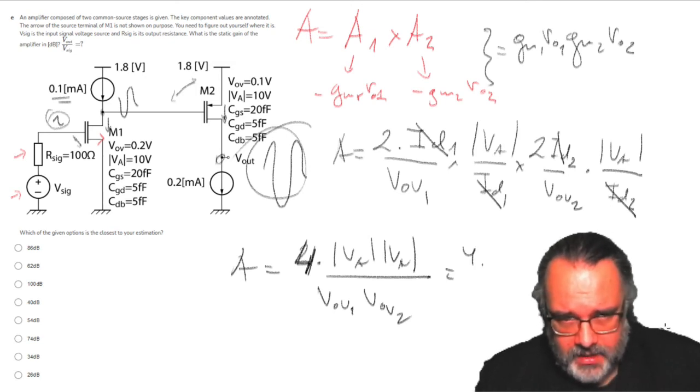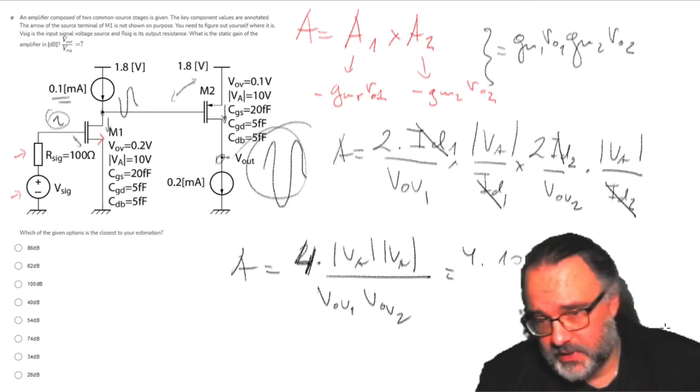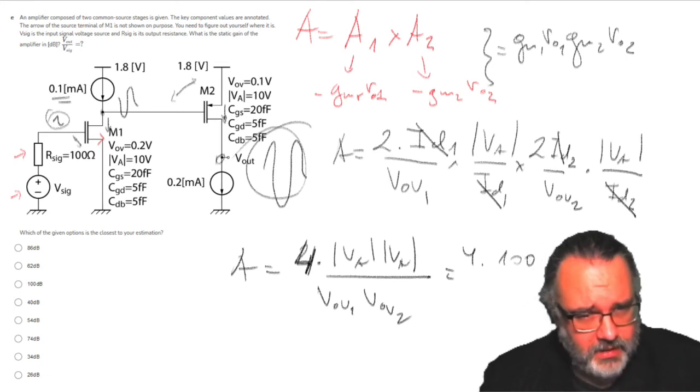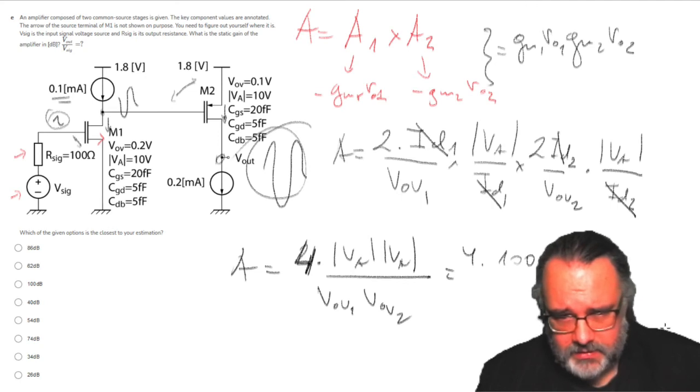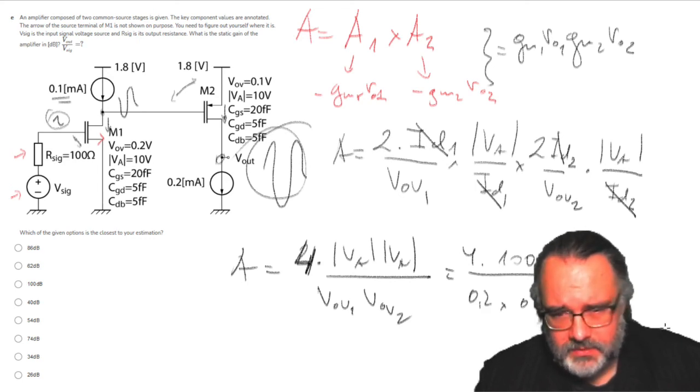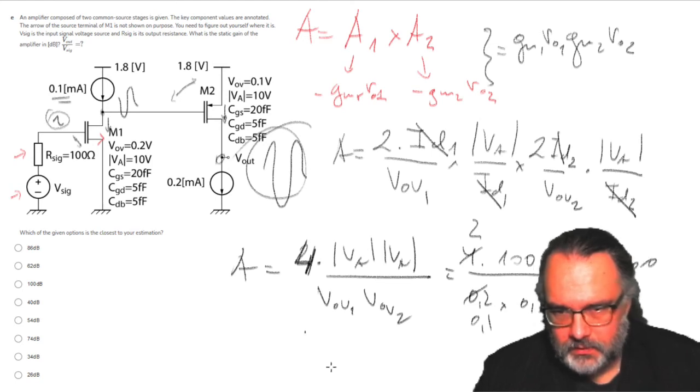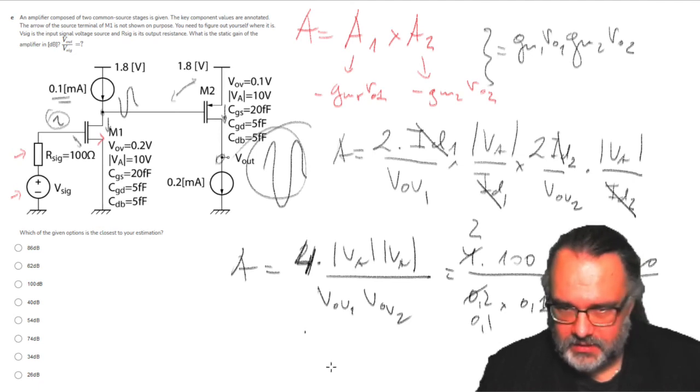Four, VA is 10, 10 times 10 is 100, and then we have V-overdrive, and V-overdrive is 0.2 volts times 0.21 volts. All right now, so let's see. So this is 2, this is 0.1, as this becomes 20, 20,000. So the gain of the first and the second stage is 20,000.